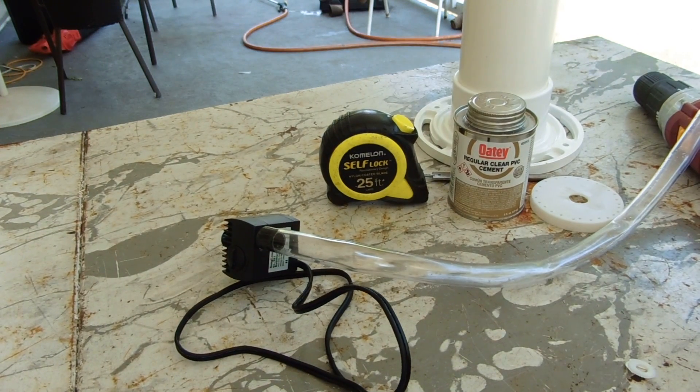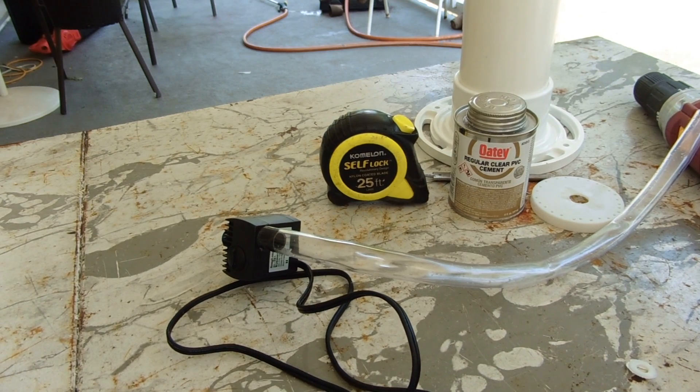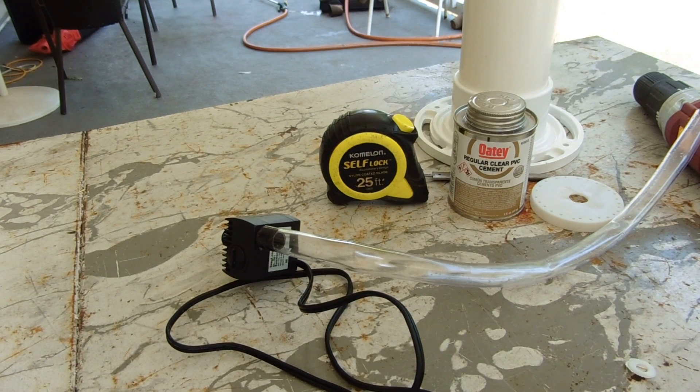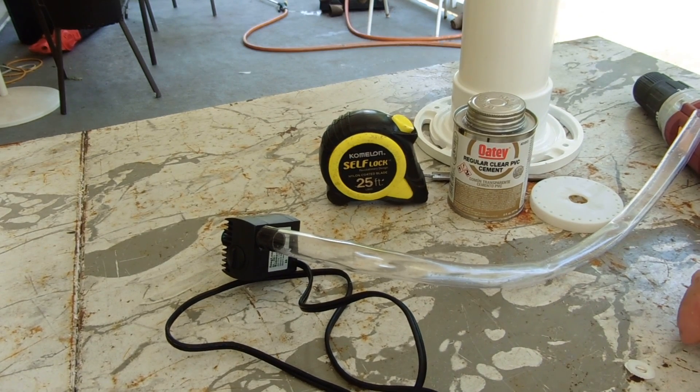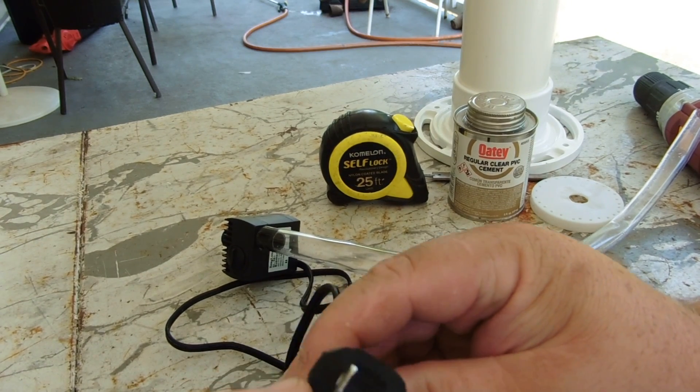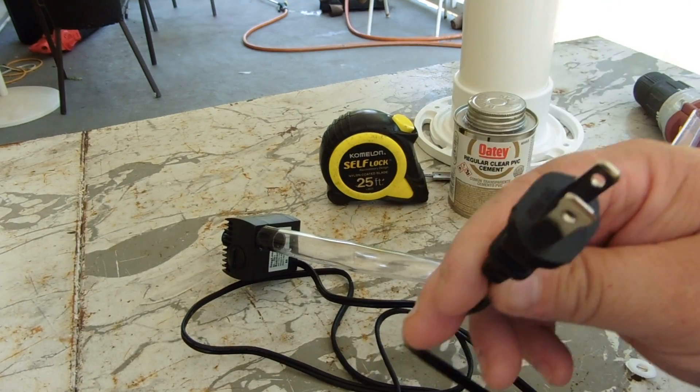You're going to need some fishing string to feed the electric plug through one of the hose, the bottom hole. And what you're going to have to do with the electrical plug, you're going to have to round the edges so you can get it through the hole.